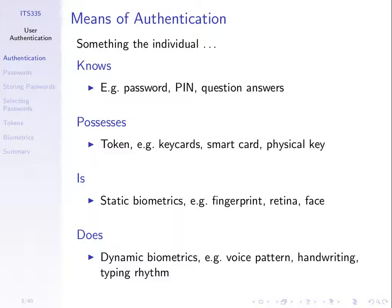The fourth way is dynamic biometrics — what an individual does. These are things that may change slightly: your voice pattern, your handwriting, the way you type keys on a keyboard. You talk into a microphone, the system compares your voice to a stored recording; if they have the same characteristics, it concludes it's the same person. Same with handwriting.